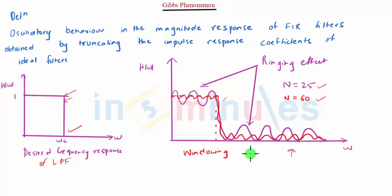A rectangular window is used to achieve simple truncation. The impulse response of the FIR filter in terms of the rectangular window is given as H(N) = HD(N) × WR(N).